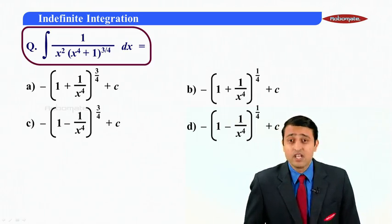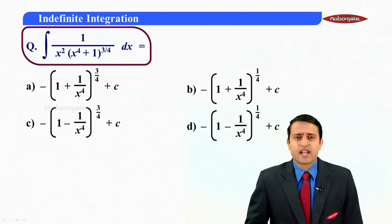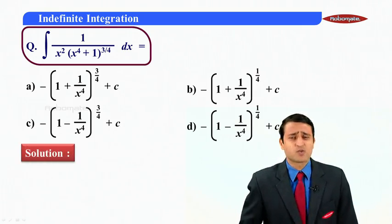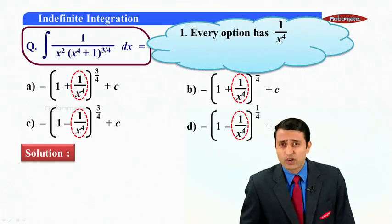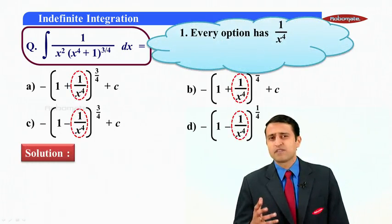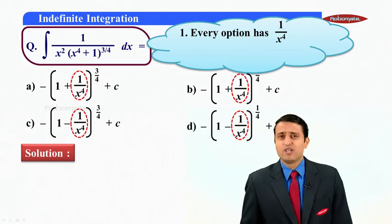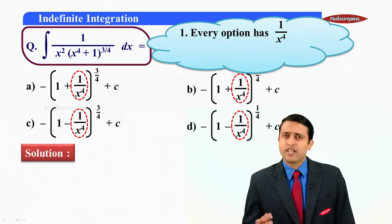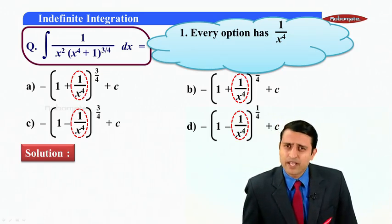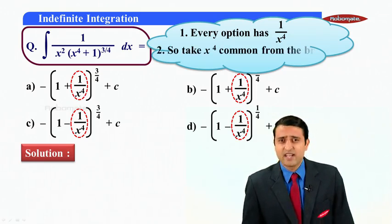Do we have any hint here? Now as I scan through these options I understand that every option has 1 upon x raise to 4. So it has to do something with the answer right? So now my question is can I write the integral also in terms of 1 upon x raise to 4? Yes I can do that.